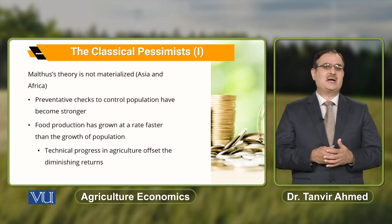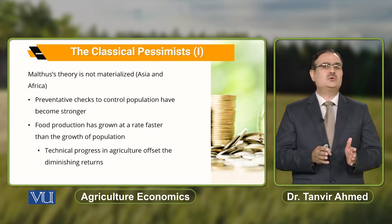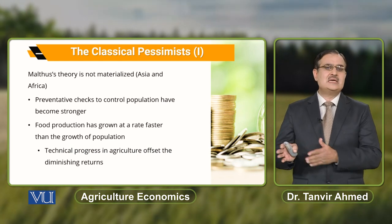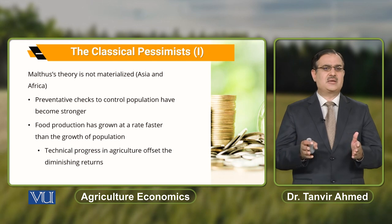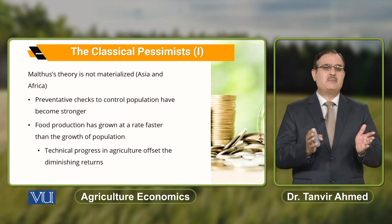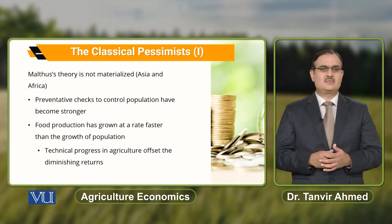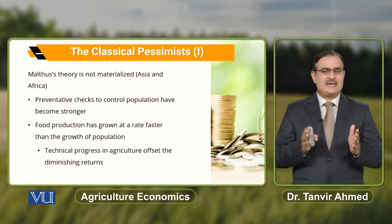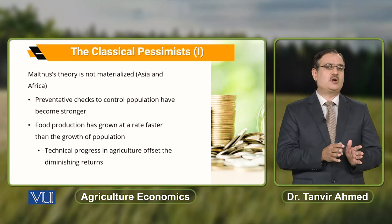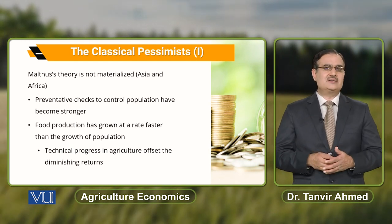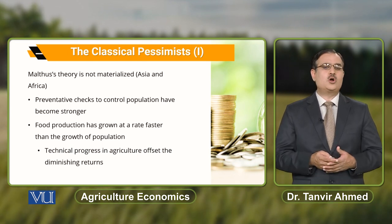When we discuss Malthus's theory in context, this Malthusian theory has not fully materialized. In some parts of Asia and Africa, we have observed that population grows at a geometric rate while food supply increases at an arithmetic ratio. But overall, as a whole, Malthusian theory has not materialized — the preventive checks to control population became stronger, and food production grew at a much faster rate than population growth. Also, technical progress in agriculture basically offsets the diminishing returns that were central to Malthusian theory, which we could not observe in real terms.